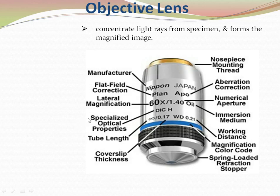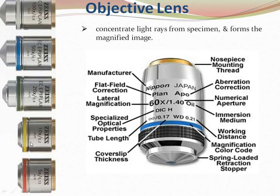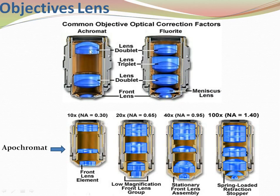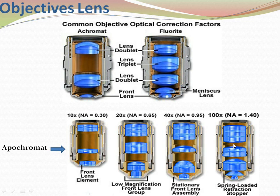There are two standards: DIC and Japanese industrial standard. Color codes for magnification: red is for 5x, yellow for 10x, green for 20x, blue for high power 50x, and white for 100x oil immersion. There are different types of objective lenses corrected for chromatic and spherical aberrations: achromate, apochromate, and fluoride, using different combinations of lenses. Types include scanning, low power, high power, and oil immersion. Higher magnification objectives have spring-loaded retraction stoppers to protect the internal lenses.